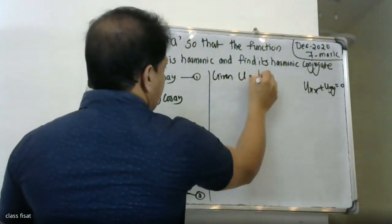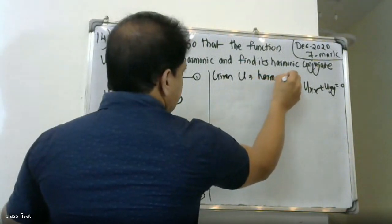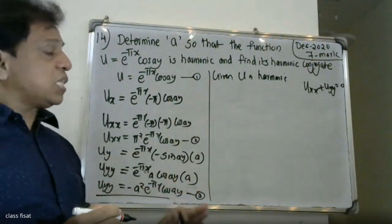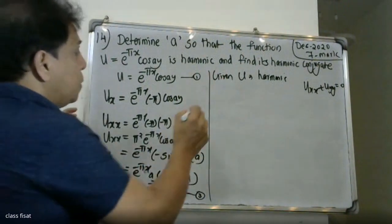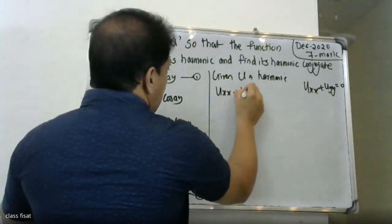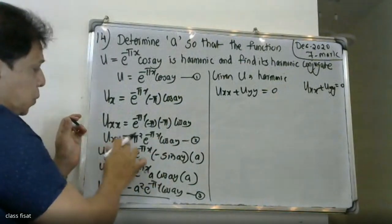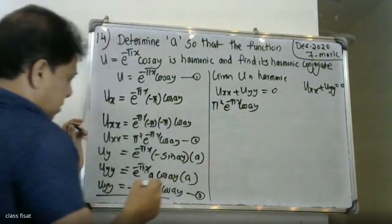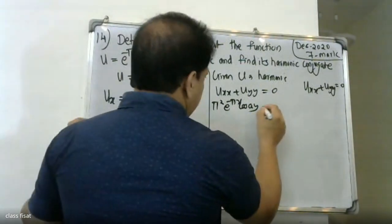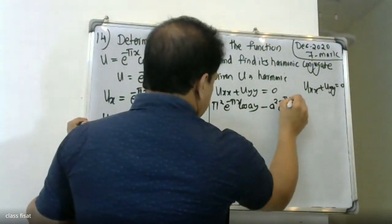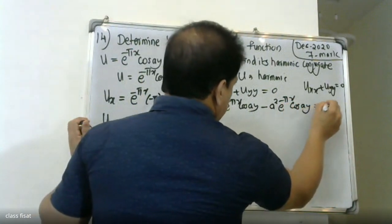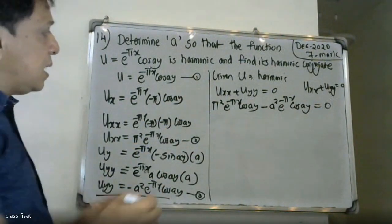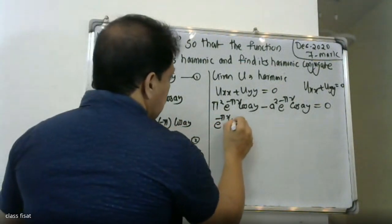Since u is harmonic, it should satisfy the Laplace equation: u_xx + u_yy = 0. Substituting: π² e^(-πx) cos(ay) plus (-a² e^(-πx) cos(ay)) = 0. Taking e^(-πx) cos(ay) as common factor, we get π² - a² = 0, therefore a = π.